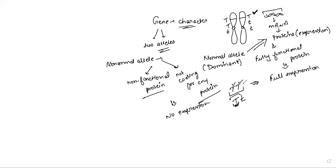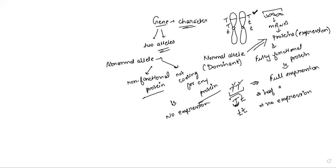So incomplete dominance occurs when a single dominant allele cannot produce full expression. As we go deeper into gene study, we understand that the complexity is so much — it is not simply that one gene controls one character, and it is not that one gene has only two allelic forms; we get multiple allelic forms. Mendel did not know many of these things, and because of this the law of dominance is not universally accepted.